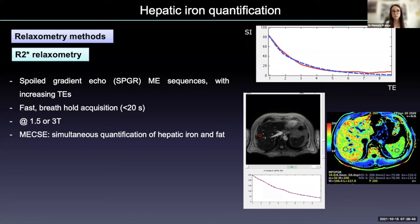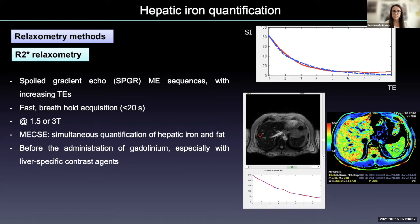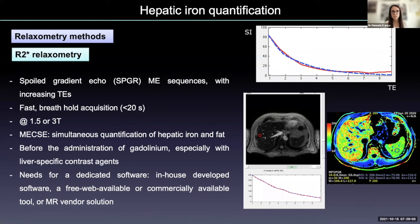If we aim to also quantify fat, we can use a multi-echo chemical shift encoded sequence. These sequences must be acquired before the administration of gadolinium. After acquisition, we need dedicated software — commercially available or in-house developed — and then we measure the R2* or obtain parametric maps that are helpful to see the distribution of iron in the liver and other abdominal tissues.